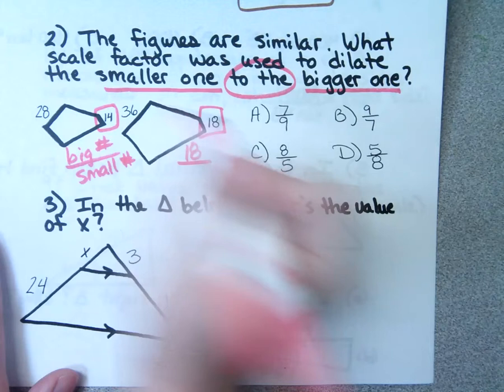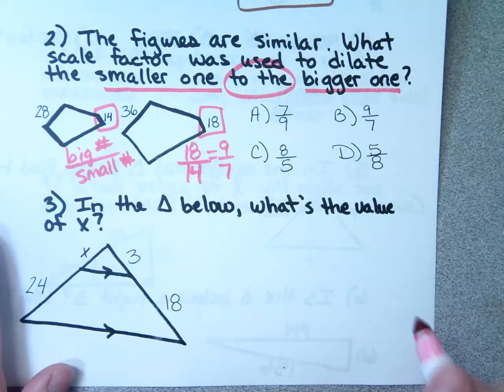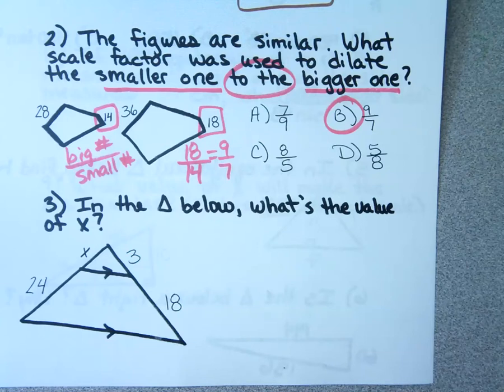Notice answer choice A — this would be if you accidentally did it in reverse. Remember, if you ever blow a shape up, if you go from small to big, your scale factor has to be a number bigger than one. So if you ever go from small to big, you need to have the big number on top, so you get a number bigger than one when you're done.